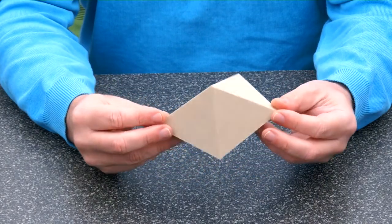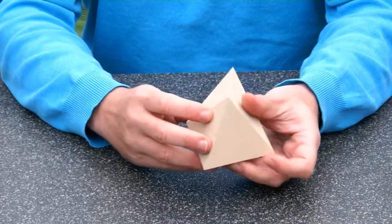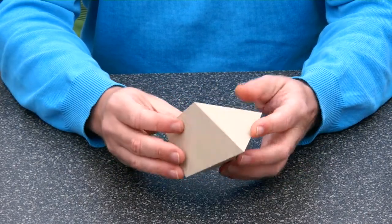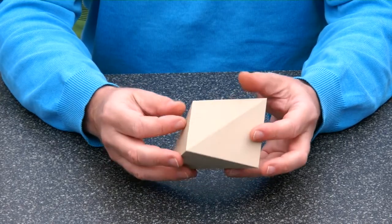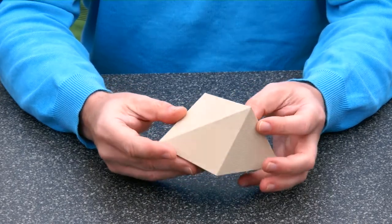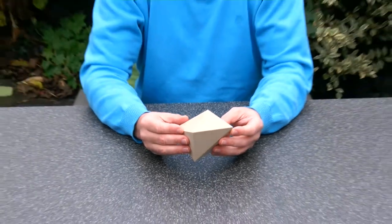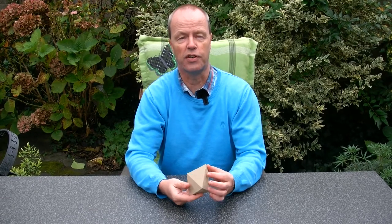So I'll show you the object from many sides, which hopefully gives you an idea of what it looks like. And you can already guess what is my question about this puzzle. Can you tell me what is the symmetry of this object?